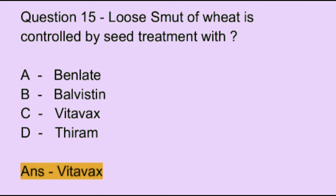Question number 15. Loose smut of wheat is controlled by seed treatment with: Option A: Benlate. Option B: Bavistin. Option C: Vitavax wax. Option D: Thiram. The correct answer is option C, which is Vitavax wax.